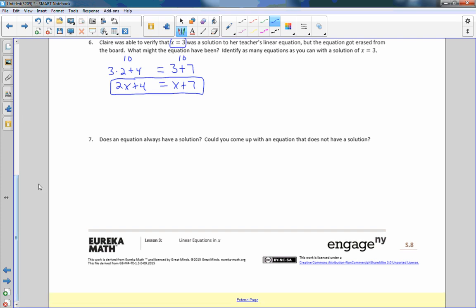Number 7. Does an equation always have a solution? Could you come up with an equation that does not have a solution? Can you put something on the other side that would never, ever be true? The easiest way to do this is to take some number and multiply it by the same thing. It's 3 times that number. We don't know what x is. And, if I add 5 to a number, and then I add 4 to that same number, obviously, they aren't going to be the same. There's one example here.